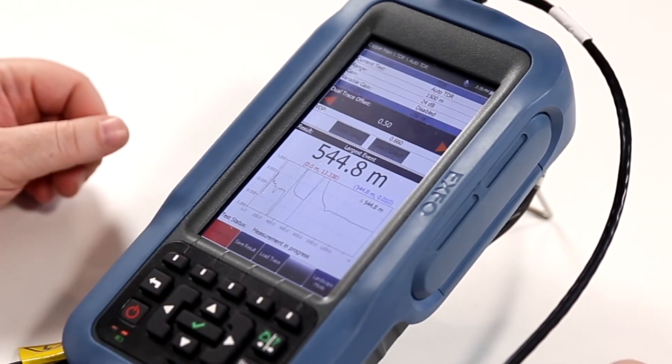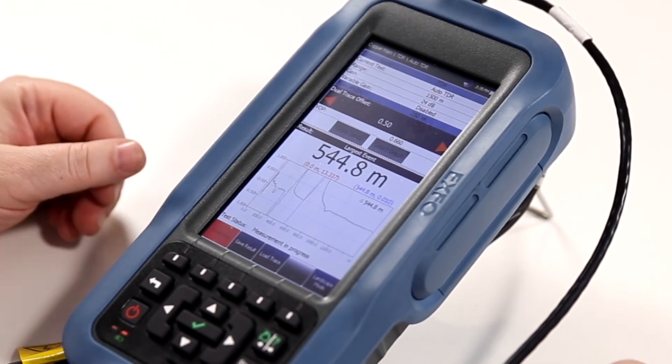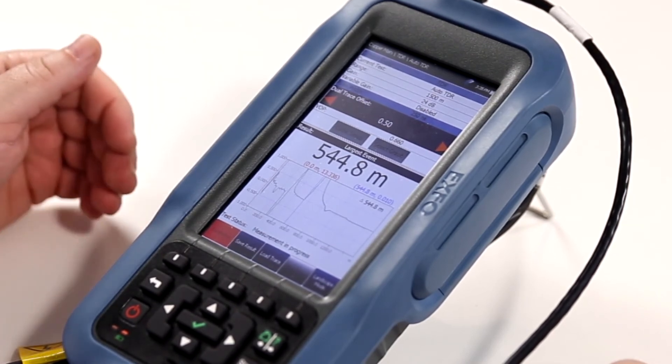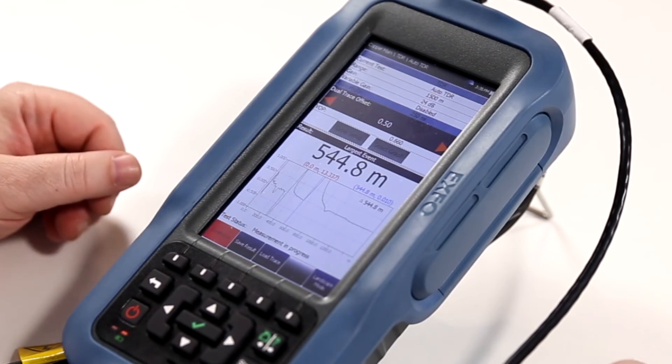If you have saved a result and you want to validate against your current test, you can load a trace and use the dual offset capabilities to display two traces on the screen.